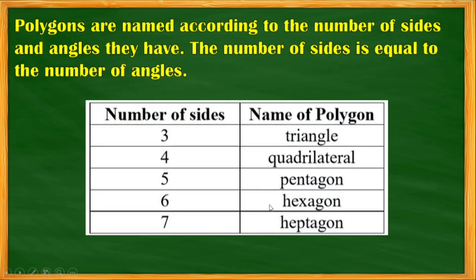So let's define polygons — they are named according to the number of sides and angles. The number of sides is equal to the number of angles. For example, a triangle has three sides and three angles.